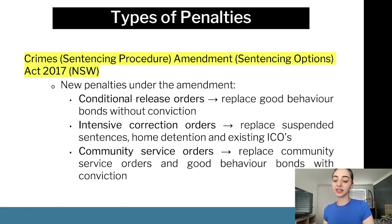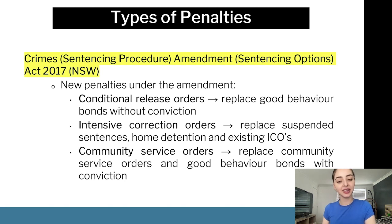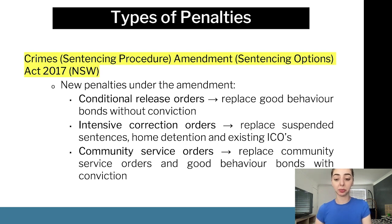In a 2017 amendment, new penalties were introduced, including conditional release orders, which replace good behaviour bonds without convictions; intensive correction orders, which replace suspended sentences; home detention and existing ICOs. So we had older intensive correction orders, but we replaced them and instead of having multiple things, we brought it into one. Community service orders were also replaced with other community service orders and good behaviour bonds.